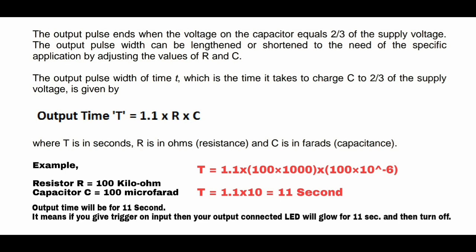Use these R and C values, connect your circuit as per the circuit diagram, and give a trigger — the output will last only 11 seconds. You can increase or decrease the time by changing the R and C values. So if you give a trigger input, the connected LED will glow for 11 seconds and then automatically turn off. This is the simplest and easiest use of the 555 timer — you can make any circuit or project with it.